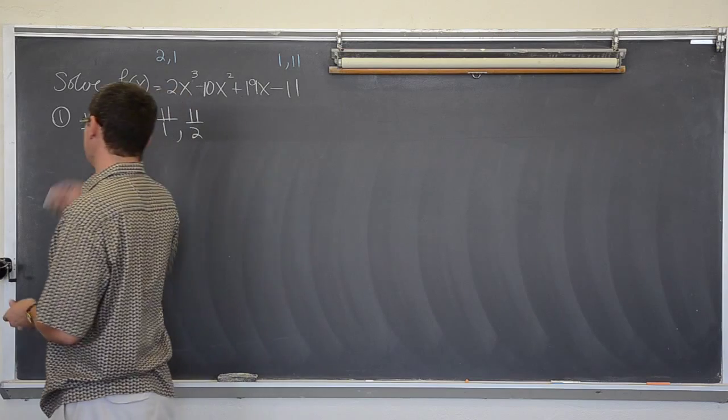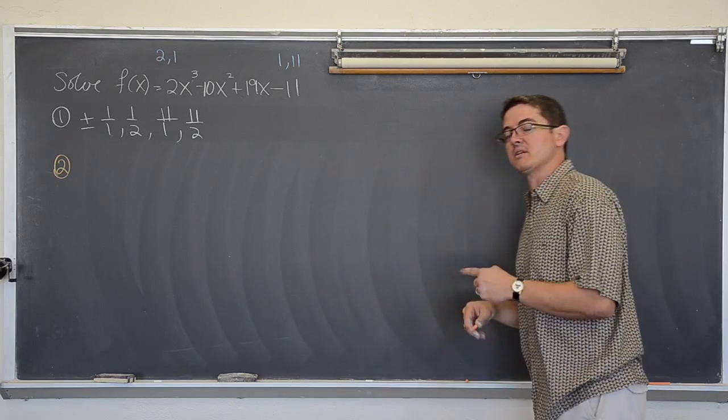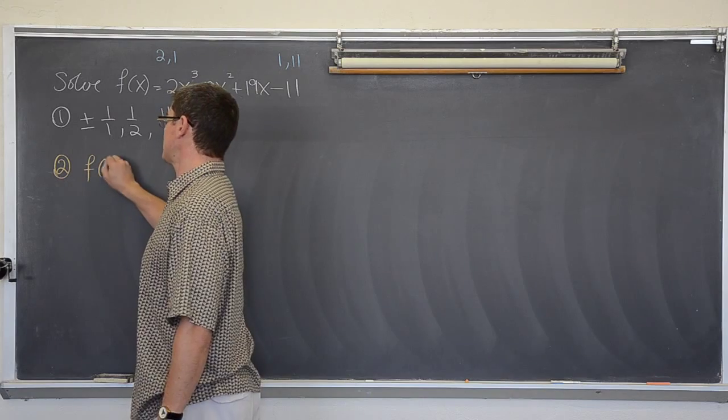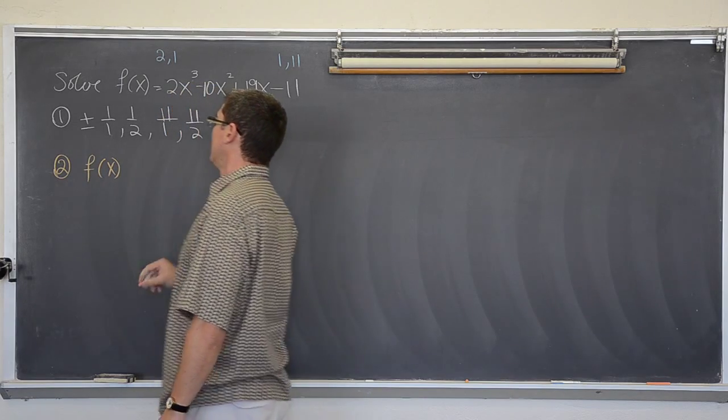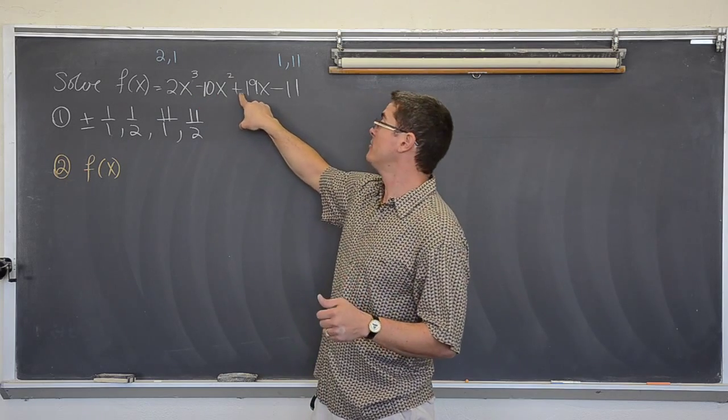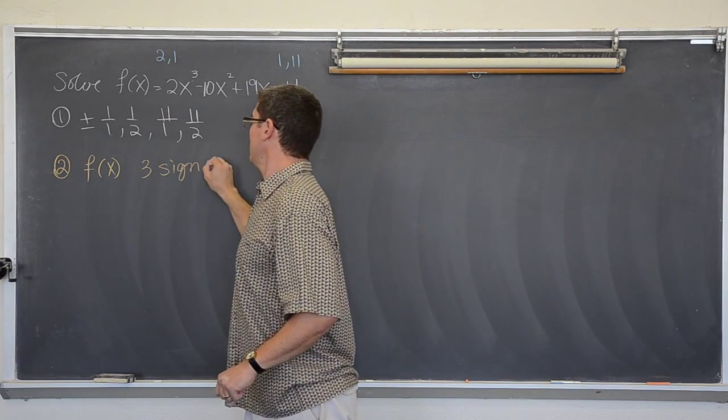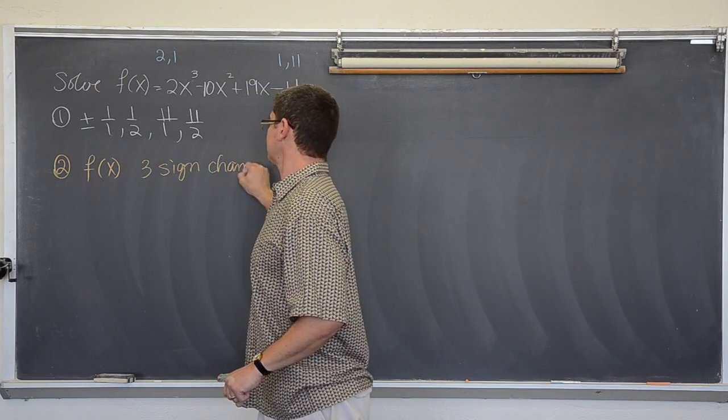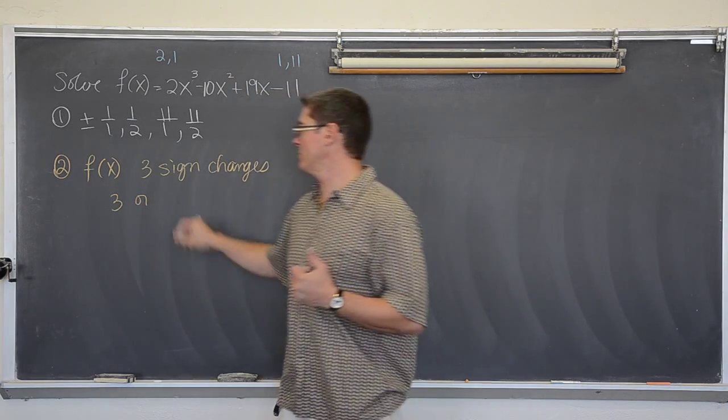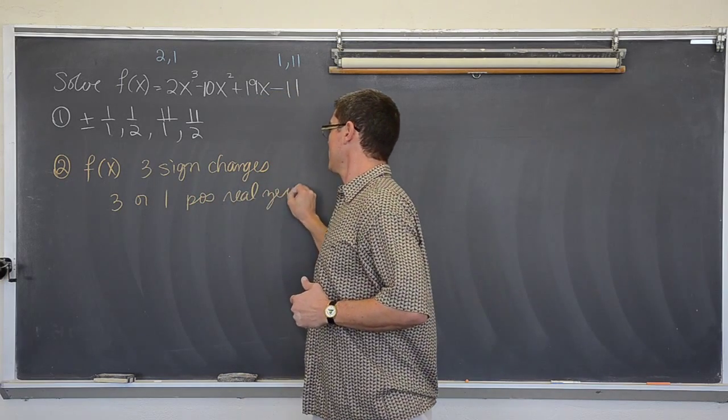So to save from all that scratch work, let's take a look at Descartes rule and see if it is going to help us eliminate any of that trial and error. Descartes rule says look at the sign changes of f(x). In mine I have positive and negative, that is 1, negative and positive 2, positive to negative, there are three sign changes.